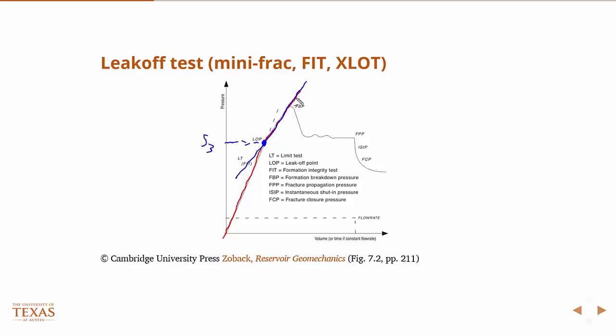If you're doing an extended leak-off test, you would continue and eventually get to a point where the pressure drops — this is called the formation breakdown pressure. You see this inflection because you're injecting fluid at a constant rate into a constant volume, so pressure goes up. Then you've initiated a fracture, adding a little volume, so you see a slight drop. But you're still pumping fluid in faster than the fracture is growing, so pressure still goes up. At the formation breakdown pressure, you're propagating a fracture faster than you can pump fluid in, and therefore the pressure drops.